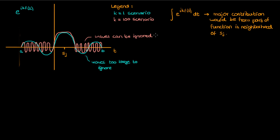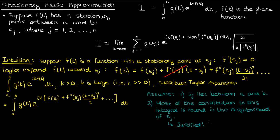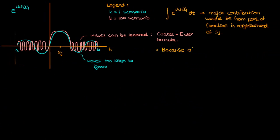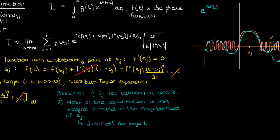You might ask how I know the function is oscillating heavily outside of s_j. There's something called the Coates-Euler formula, which I won't discuss here, that justifies this — for now you just have to believe me. Going back to our integral, this explanation should tell you why I made the second assumption. If k is sufficiently large the assumption is quite justified, and since most of the contribution is near s_j, I only need to consider f in the nearby vicinity of s_j, allowing me to ignore higher-order terms and only keep the quadratic term in the Taylor expansion.